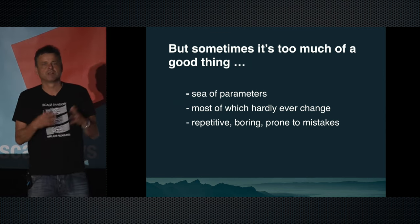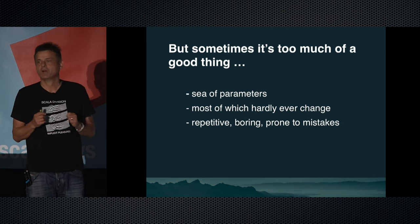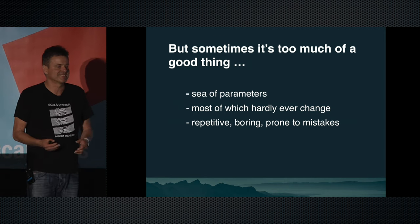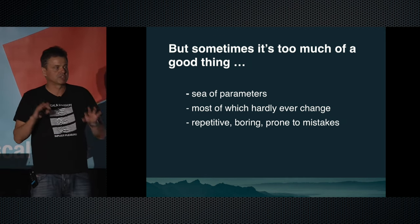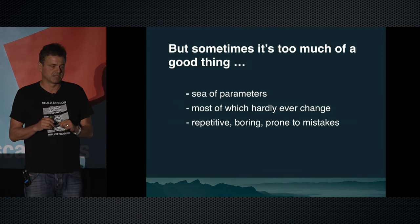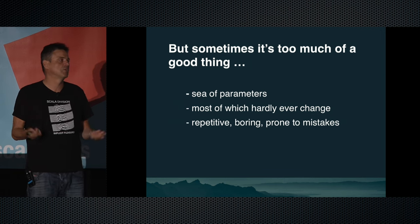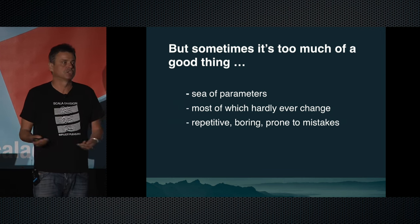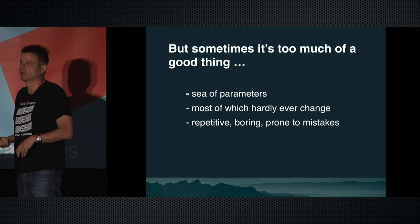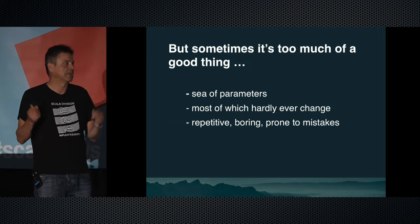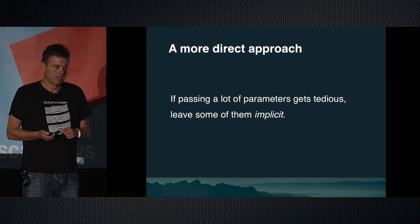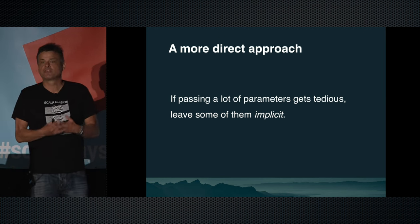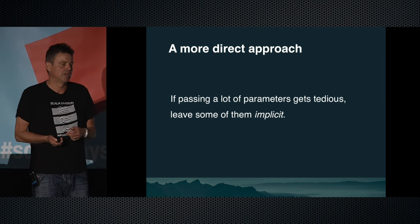But sometimes functional parameter passing is too much of a good thing — it leads to a lot of parameters. Sometimes methods have dozens of parameters, a sea of parameters, most of which hardly ever change. Most of them you just pass down to other functions down the call chain. The code ends up being repetitive, boring, and prone to mistakes — you might swap the order of some parameters or just mistype one. A more direct approach: if passing a lot of parameters gets tedious, leave some of them implicit. That leads us to implicits.